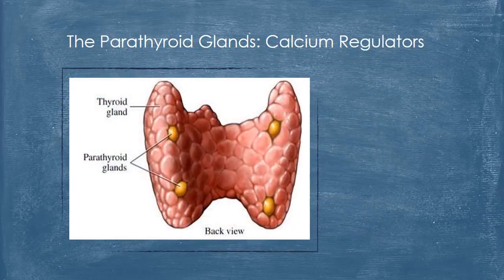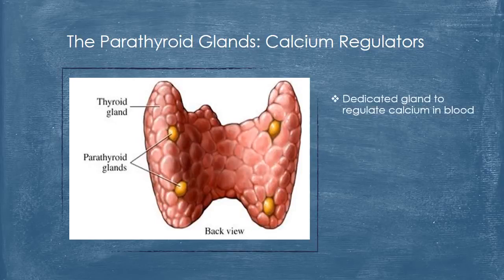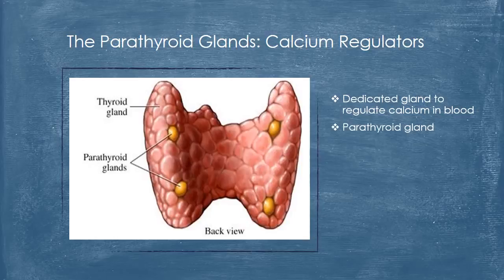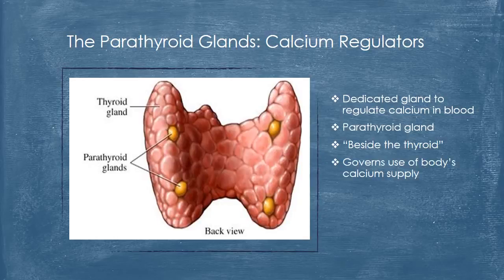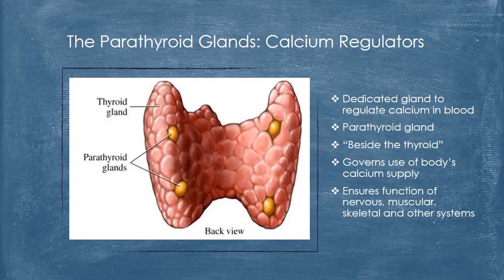Though you may have heard that calcium is of the utmost importance, it may have escaped your attention that your body has a gland solely dedicated to regulate calcium in the blood and control vital bodily functions. Called the parathyroid — meaning beside the thyroid — this gland governs the use of your body's calcium supply to ensure function of the nervous, muscular, and skeletal systems, to name but a few.